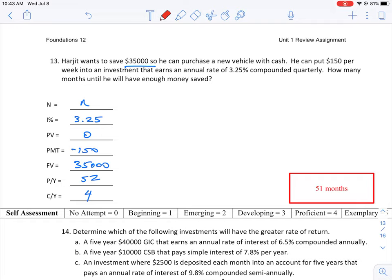The payments per year, this is the one that you need to be careful of here. He can put in $150 a week. So that means we are saving—there's 52 weeks in a year. So we are paying 52 weeks in one year, $150 every week. So that's an important value that you've got to make sure that you get right.